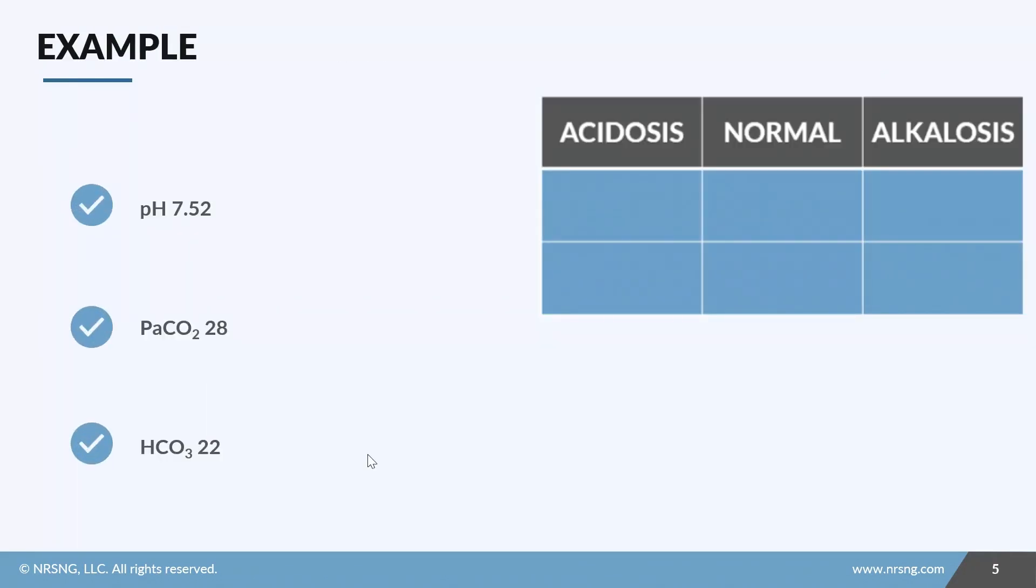So step one: pH 7.52, it's high so it is alkalosis, I'll write pH in that top box. PaCO2, it is low so it is also alkalosis, so I'll write CO2 in this box. Bicarb of 22, that is normal, so I will write the bicarb in this box.